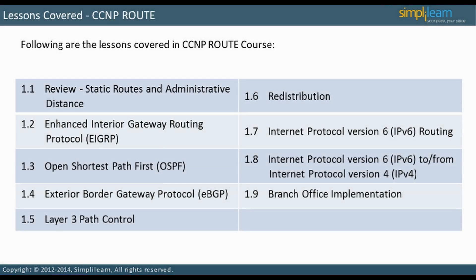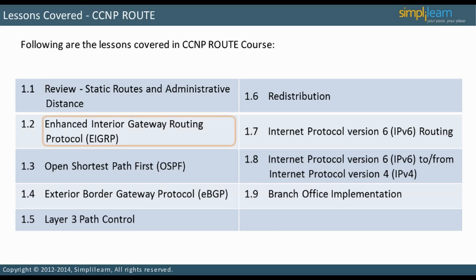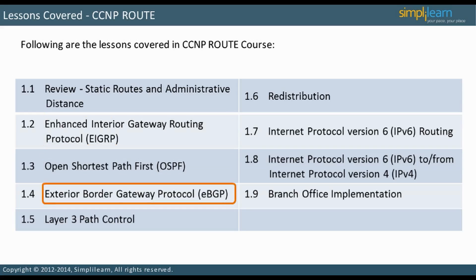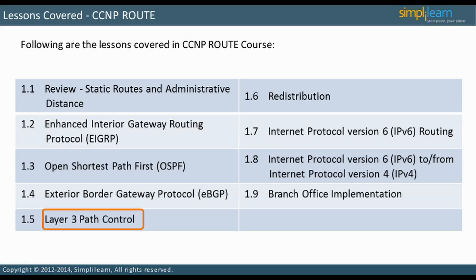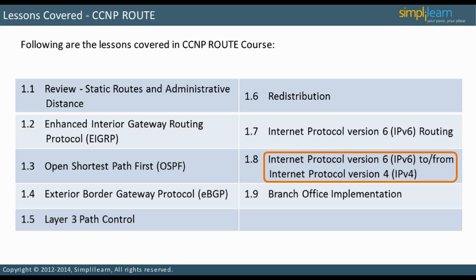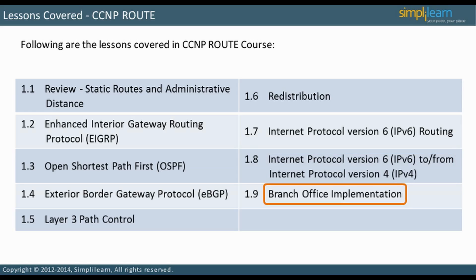There are nine lessons in the CCNP Route Module. First, there is a review of static routes and administrative distance. We then move into Dynamic Routing Protocols, starting with EIGRP, then OSPF, followed by Exterior Border Gateway Protocol. Next is a discussion of various Layer 3 Path Control Tools, then the important topic of redistribution. We take a detailed look at IPv6 routing and interchange between IPv6 and IPv4. Finally, the course is capped off with a practical discussion of branch office implementation.